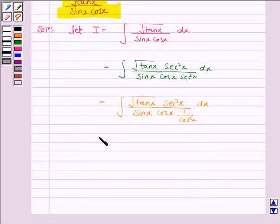So this is further equal to under root tan x into secant square x upon tan x. The sin x upon cos x is tan x dx.